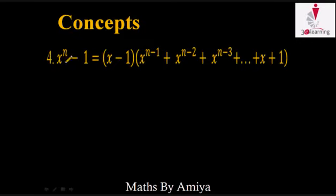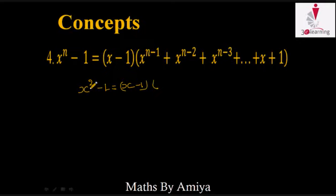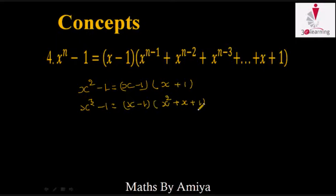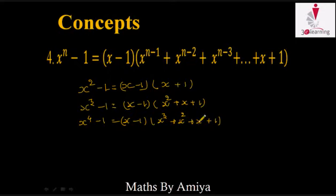Concept number 4: if a polynomial is in the form x^n - 1, then its factorization includes (x - 1) multiplied by a polynomial with decreasing powers of x down to 1. For example, x^2 - 1 factors as (x - 1)(x + 1), and x^3 - 1 factors as (x - 1)(x^2 + x + 1).